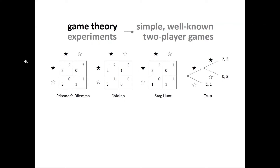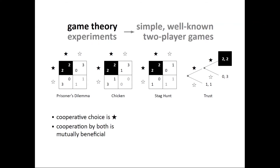All these games have some things in common. In all these games there is a cooperative choice — identified with a solid star — where mutual cooperation is better for both players than mutual non-cooperation. In Prisoner's Dilemma, Chicken, and Stag Hunt, mutual cooperation is better for both, and the same holds in the game of Trust.